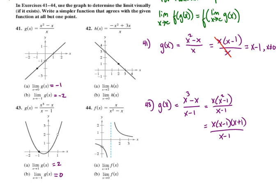So we're going to factor that again. We end up with x times x minus 1 times x plus 1, all divided by x minus 1. The x minus 1s will cancel, leaving us just with x times x plus 1, which agrees with the original function at all points except where x equals 1.